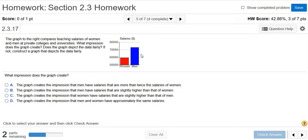Okay, so based off this graph, it looks like men make twice as much money as women. However, you'll notice that the graph starts at $50,000, so it's flawed. The graph creates the impression that men have salaries that are more than twice the salaries of women.